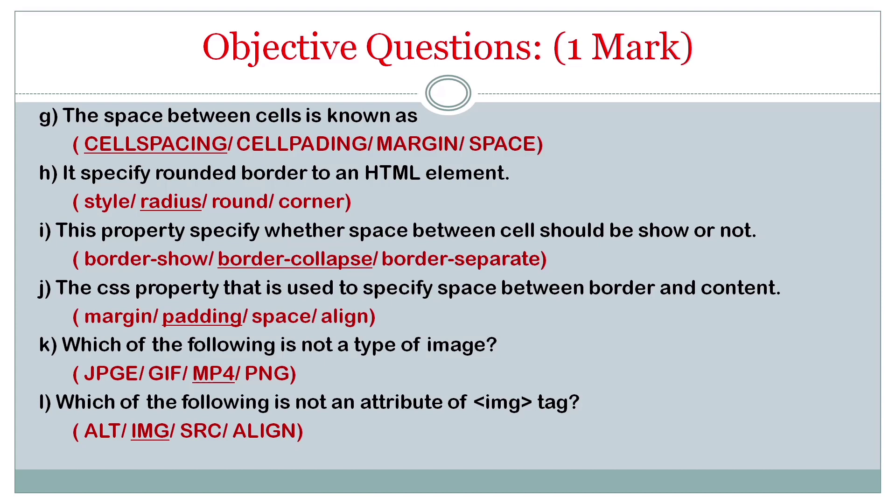Which of the following is not a type of image? It is MP4. MP4 is the type of video. Which of the following is not an attribute of IMG tag? It is IMG. IMG is the tag, it is not the attribute. The others are attributes: ALT, SRC, ALIGN.